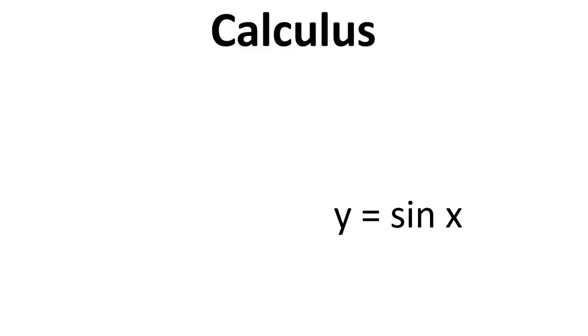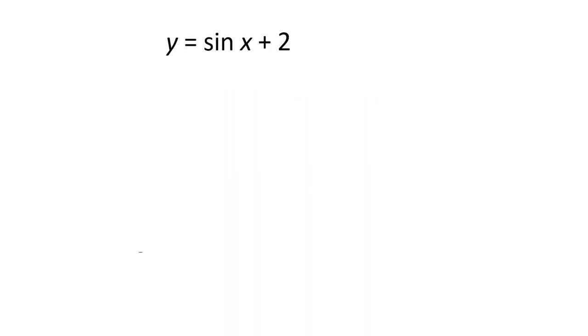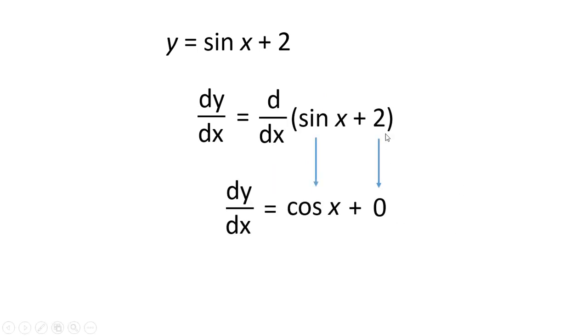We know that if we differentiate y equals sin x, we get cos x. So for this example, the sin x goes to cos x and the 2 goes to 0, so overall we have dy/dx equals cos x.